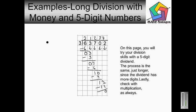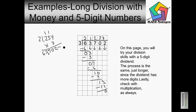Now I can check my answer. I have twenty-one thousand two hundred and thirty-four, and I would multiply that by three. Four times three is twelve — carry the one. Three times three is nine, plus the one is going to give me ten — carry the one. Three times two is six, plus the one is going to give me seven. Three times one is three. And three times two is six. As you can see I get the same result, so my answer is twenty-one thousand two hundred and thirty-four.